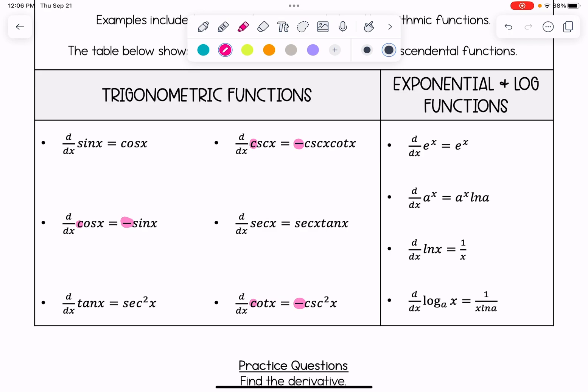On the right, we have derivatives of exponential and log functions. The derivative of e to the x is simply e to the x. The derivative of a to the x, where a is some number, is a to the x ln of a.